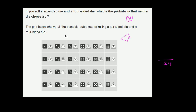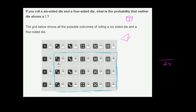How many outcomes meet our constraint that neither die shows a 1? Anything in the first row won't meet our constraint, because those have a 1 on the four-sided die. Nothing in the first column works either, because those have a 1 on the six-sided die. But everything left over meets our constraints — that's a 3 by 4 grid, so 12 possible favorable outcomes.